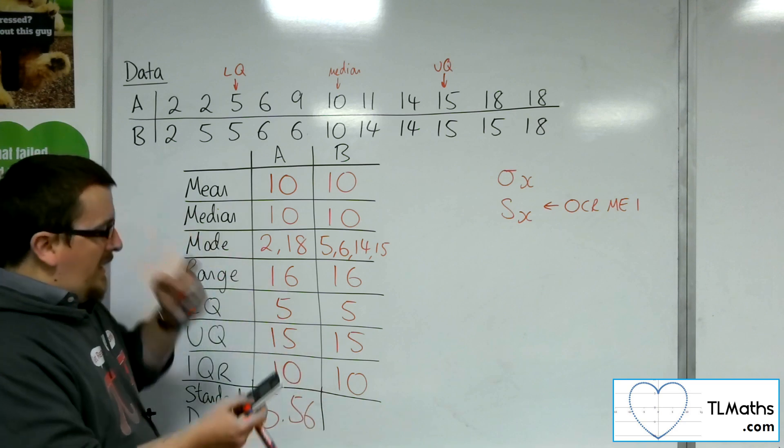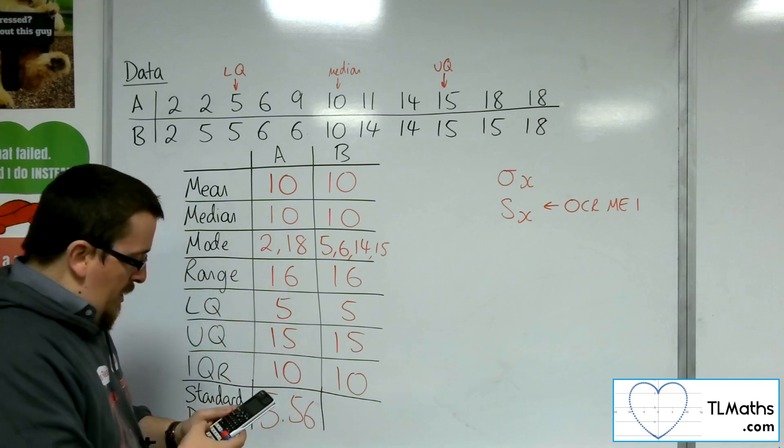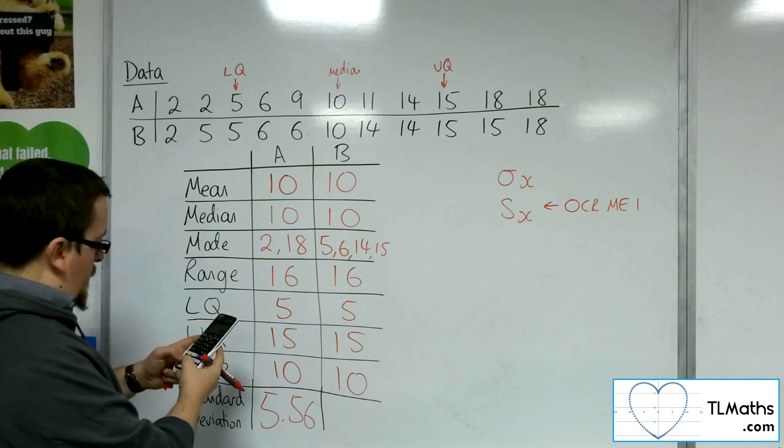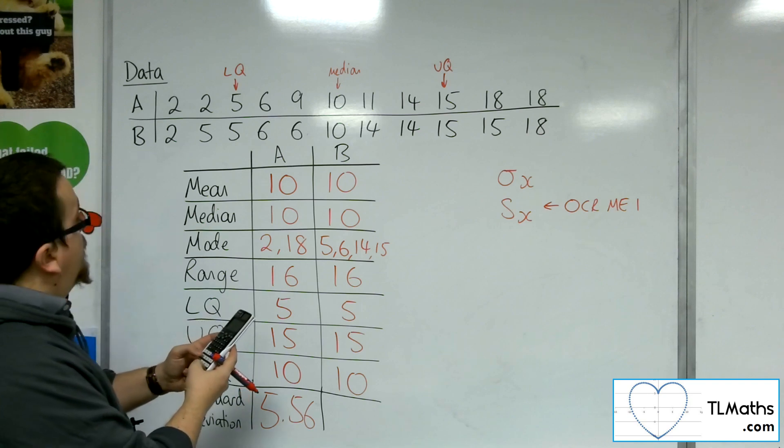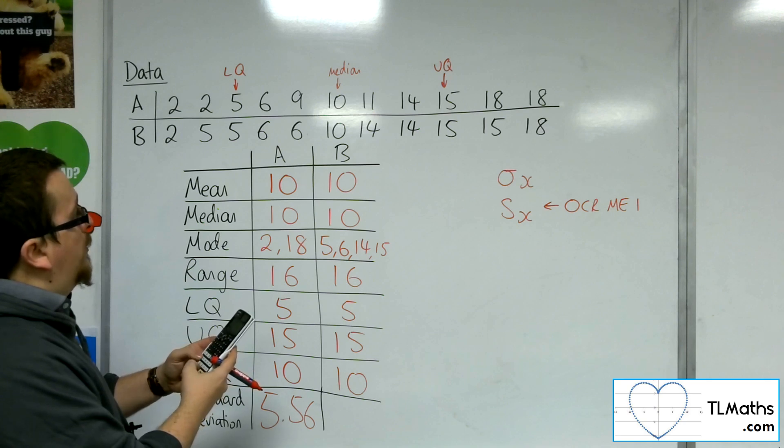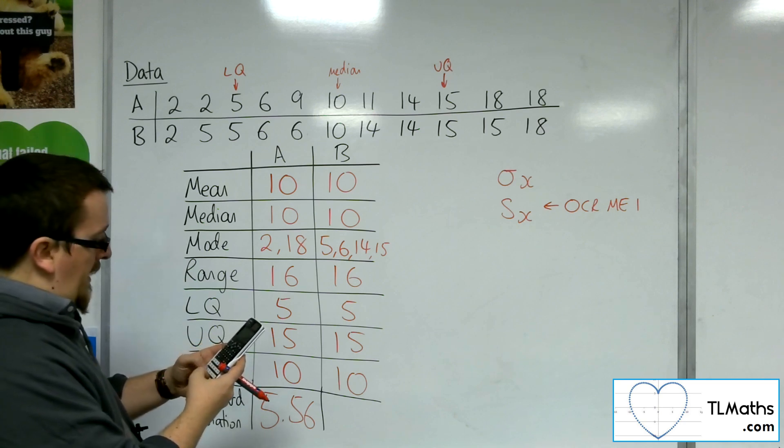As for the second set of data, menu, number 6, one variable, and then put in the data, 2, 5, 5, 6, 6, 10, 14, 14, 15, 15, and 18.